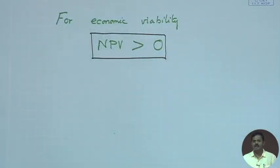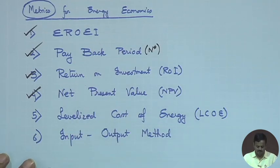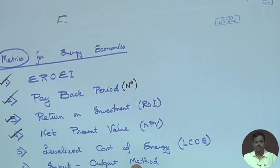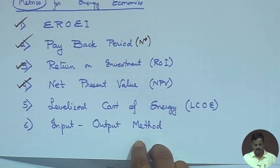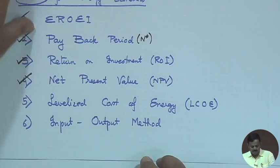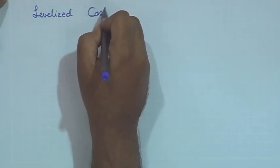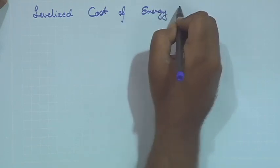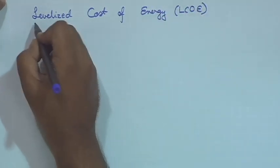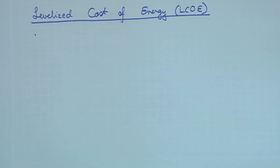We have now covered net present value. The fifth metric is probably the most widely used and important one: it is called levelized cost of energy, or LCOE. This is the most widely used metric for comparing an energy source.